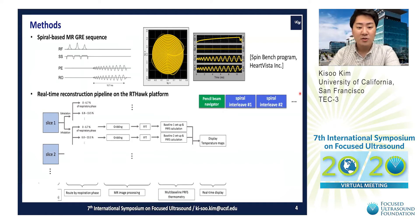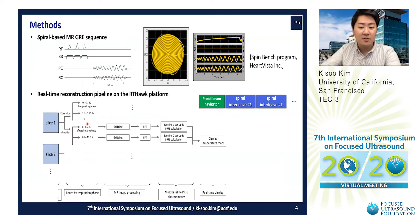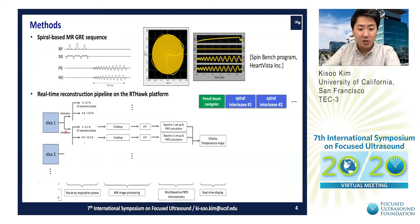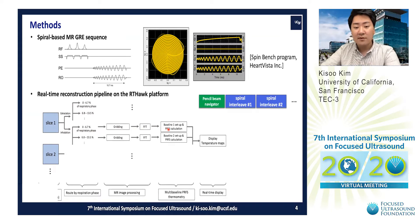The navigator sequence can measure magnitude at a few lines in k-space, which can represent respiratory phase. Once we have raw data from the MRI scanner, we can compare the current navigator with the prior navigator to decide whether the patient is in exhalation or inhalation. Then, data is sorted by respiratory phase and processed through gradient reconstruction and fast Fourier transform to calculate the PRFS method at each baseline.